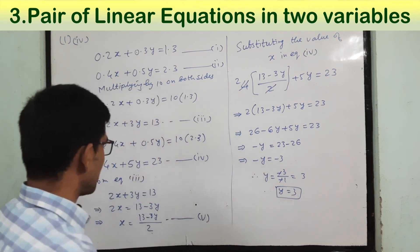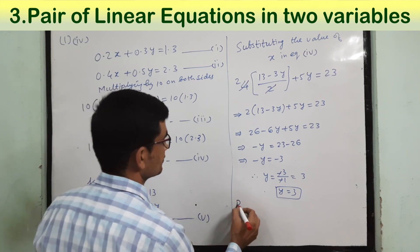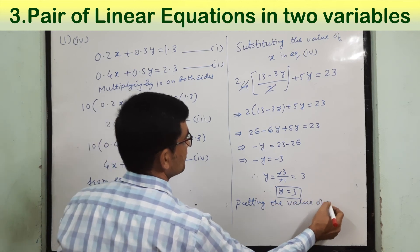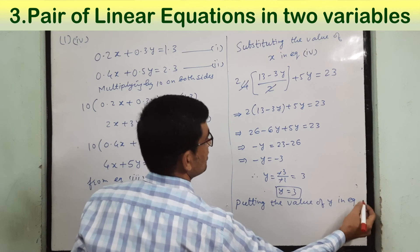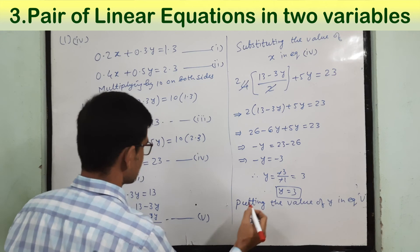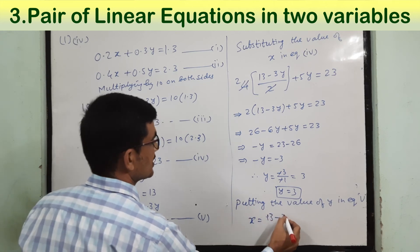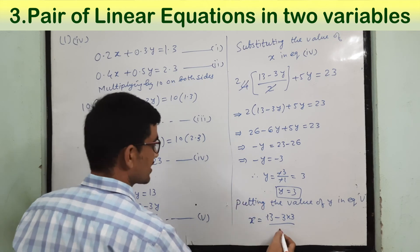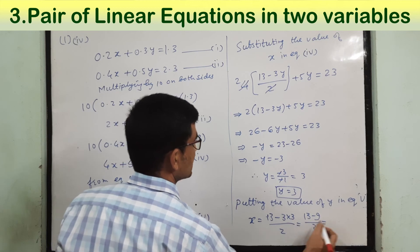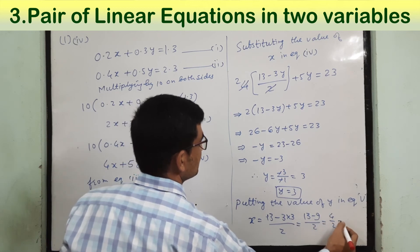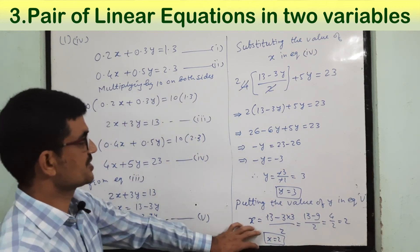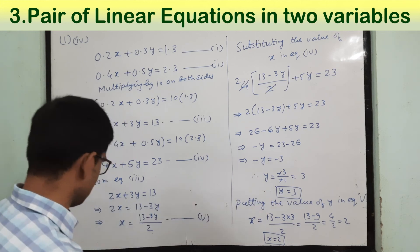Now we put the value of y in equation 5 — that is x equals (13 minus 3 times y) divided by 2, which gives (13 minus 9) divided by 2, that is 4 by 2. So x equals 2. These are the solutions: x equal to 2 and y equal to 3.